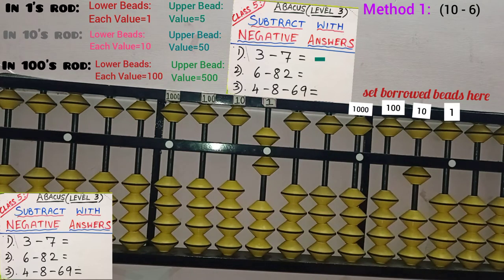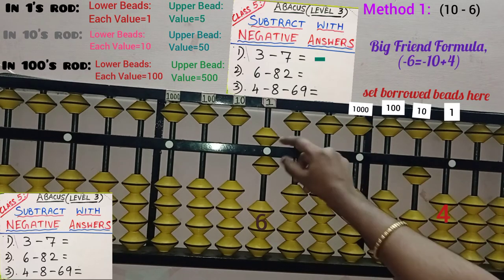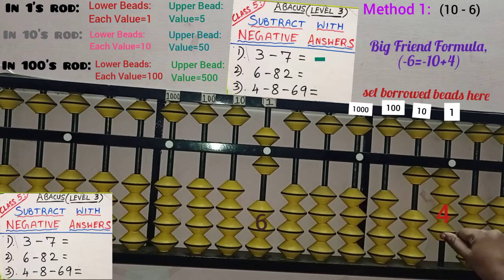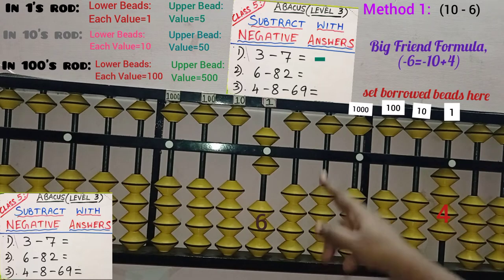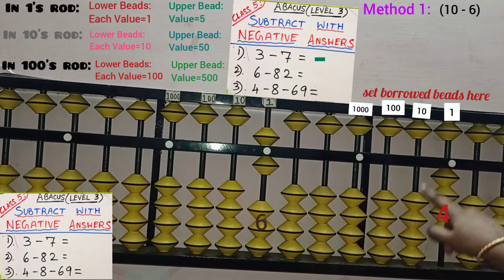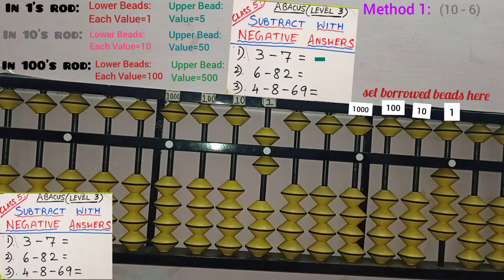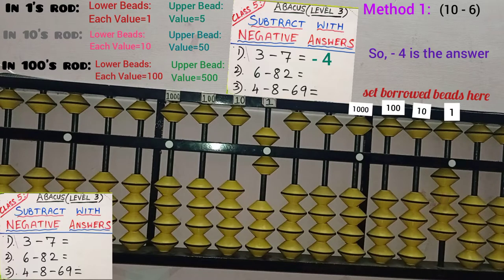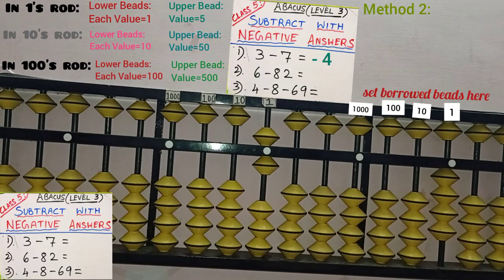6 beads are there. 6's big friend is 4 because 6 plus 4 equals 10. So here, 6 means we need to add 4 beads in the same 1's rod — plus 4 — and do minus 10, which is the big friend formula for subtracting 6. So minus 10 plus 4 equals minus 6 completed. What we did here is 10 minus 6 equals 4. Once borrowed beads are not written, minus 4 is the answer.